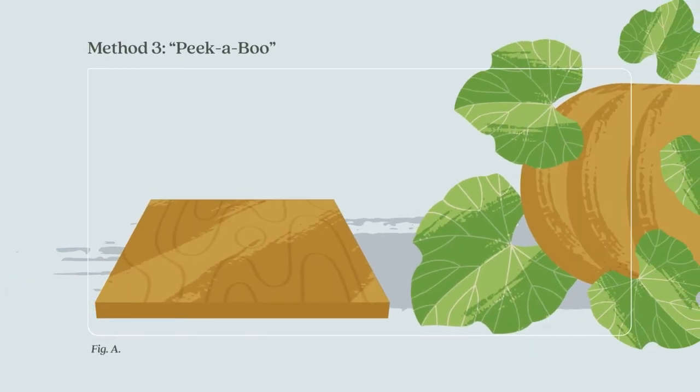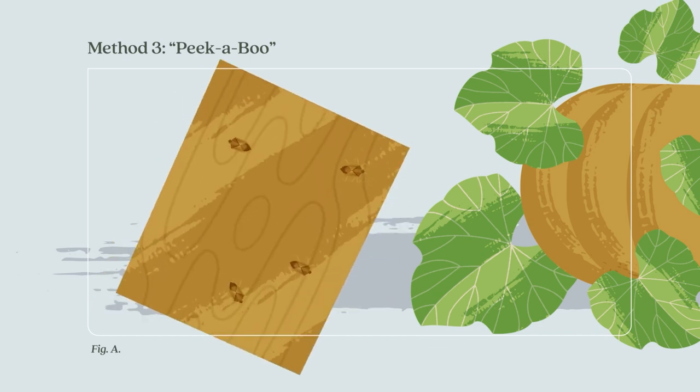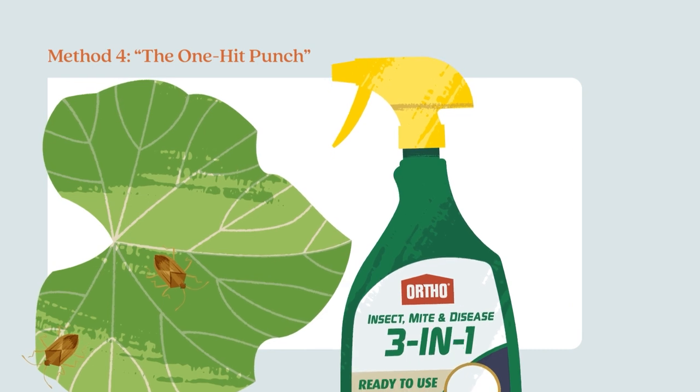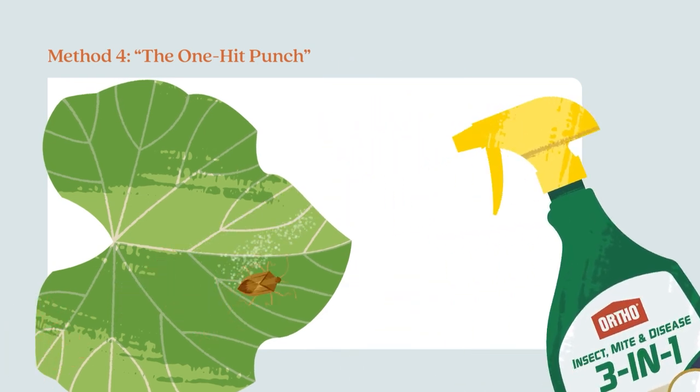Set boards near your plants at night to encourage squash bugs to gather. Flip them over in the morning and remove the bugs. For big infestations, spray Ortho Insect Mite and Disease 3 in 1 ready to use.